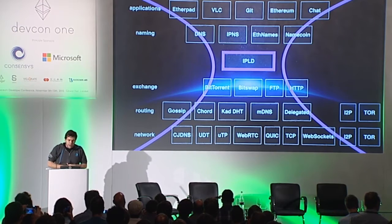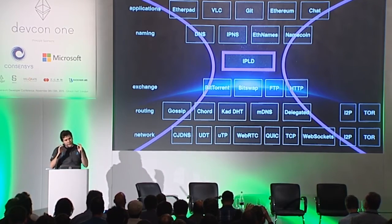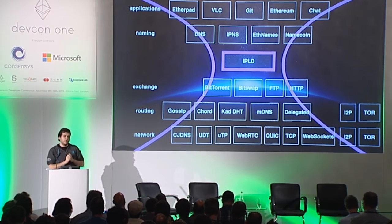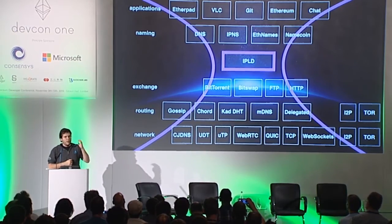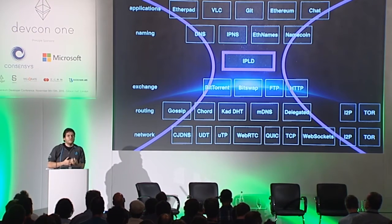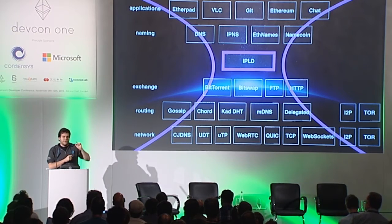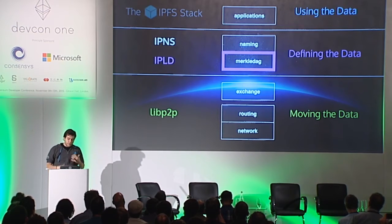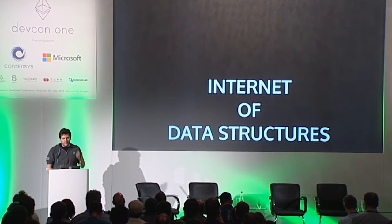On top of transports, on top of different routing, we want to layer what we're calling IPLD, which is the Merkle DAG or the Merkle Web, as this common data structure that we can all use for expressing our data structures. It's kind of the same idea as the semantic web, but instead of just having an object definition, imagine if the object definition linked between objects with hashes. That's the heart of IPFS — what happens when, instead of having a URL that points from one object to another using a location, you point using hashes? This idea has been around for a while.